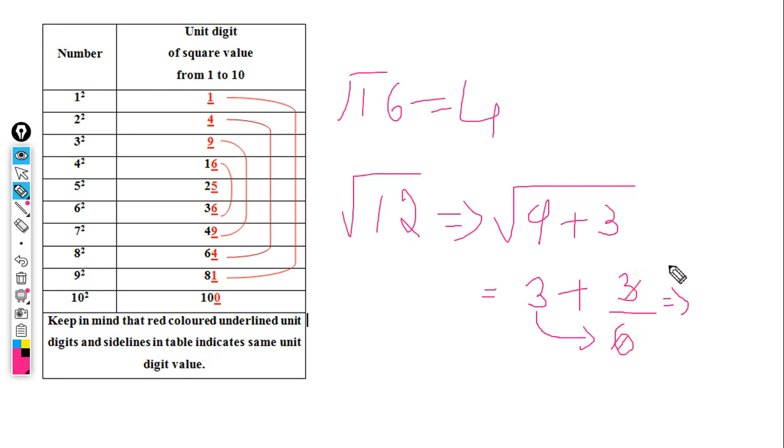When you divide 1 by 6, you get approximately 0.17. So 3 plus 0.17 equals 3.17, which is very close to the correct answer.